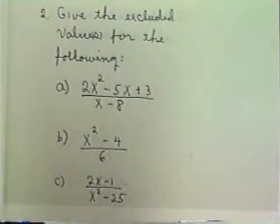b, x squared minus 4 divided by 6. c, 2x minus 1 divided by x squared minus 25.